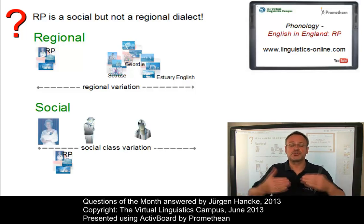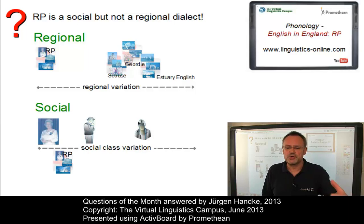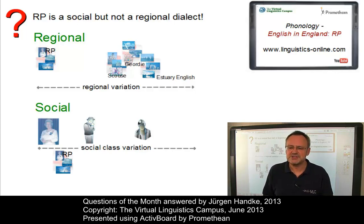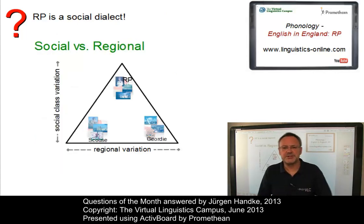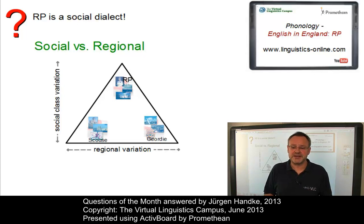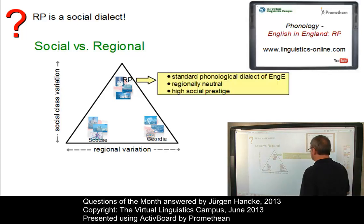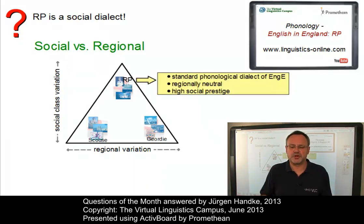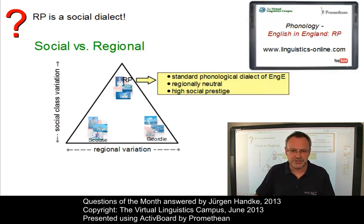Another parameter is the social one. This time, the variety or social dialect is associated with parameters such as social prestige or acceptance. And according to this parameter, RP is the dialect with the highest degree of acceptance. If we now combine the regional and the social parameter and relate them to the situation in England, we can see that upper class phonological dialects exhibit no regional variation and that working class varieties display a good deal of regional variation. So received pronunciation is, at the same time, the standard phonological dialect of the English spoken in England and the variety with the highest social prestige — it is, if you wish, a social dialect. Regionally, however, it is neutral.